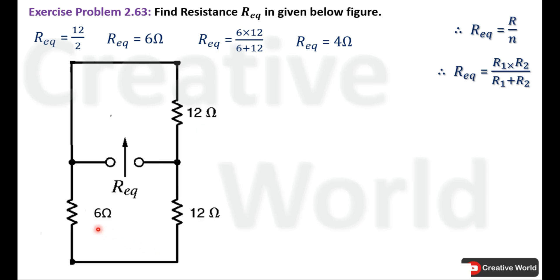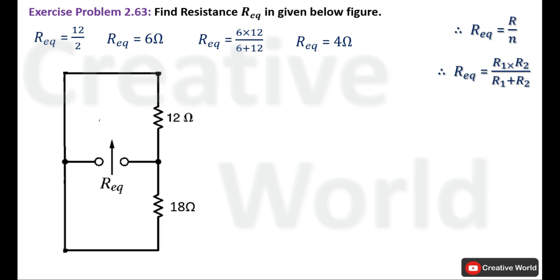Now these two resistances are connected in series. We find their equivalent resistance by adding both together. The sum of these resistances is 18 Ohm.